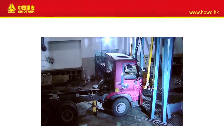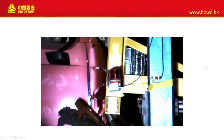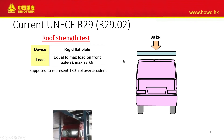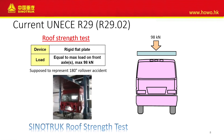The most important test is the frontal impact. After that, we have the roof strength test. This test is supposed to represent a 180-degree rollover accident — imagine the truck has an accident and the roof touches the ground. There will be a force applied on top of the roof, normally equal to the load of the front axle, with a maximum of 98 kilonewtons. This is the picture of the roof strength test from Sinotruck.